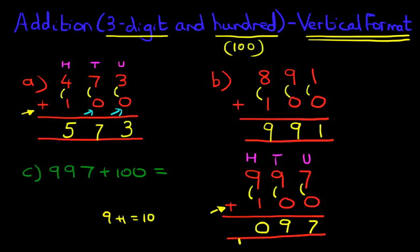Now, this 1 over here is now part of a new column. We've done this before, which is the thousands column. Now, there are no thousands here, no thousands here. It's only this one over here. So therefore, we write that down. So 997 plus 100 is 1097.